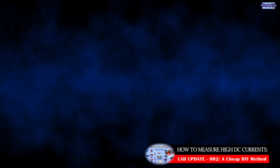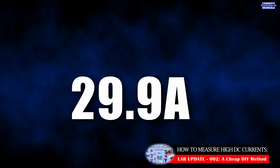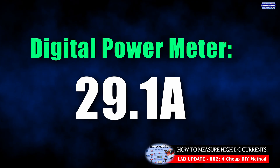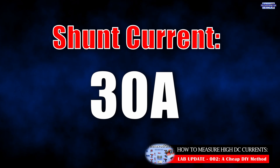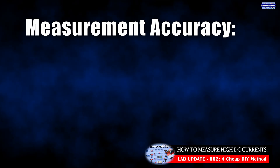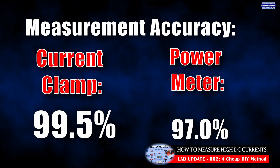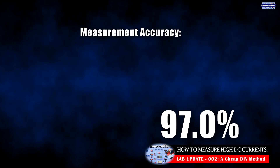During the test, the digital current clamp measured 29.86 amps and the digital power monitor measured 29.1 amps. When we compare these with our calculated value through the shunt — which is 30 amps — we're seeing a measurement accuracy of 99.53% on the current clamp and a measurement accuracy of 97% on the digital power monitor.